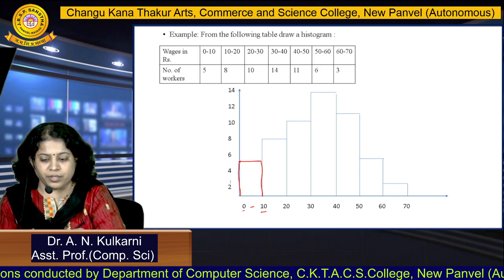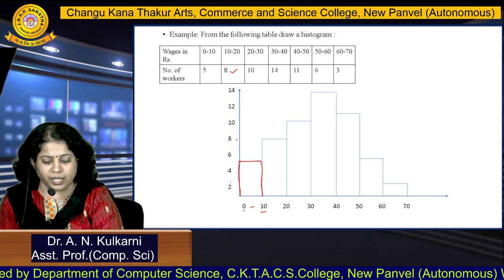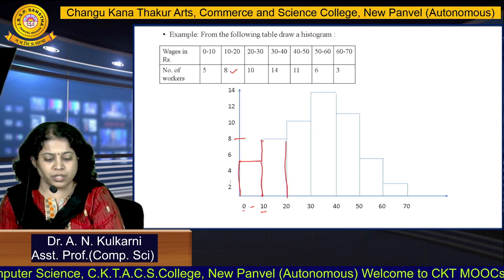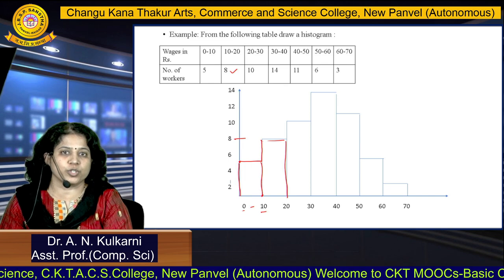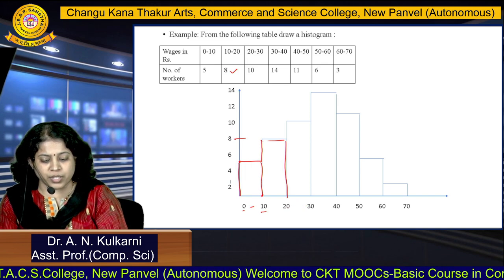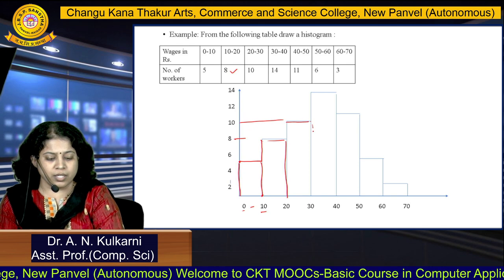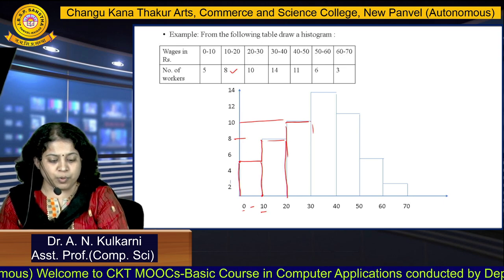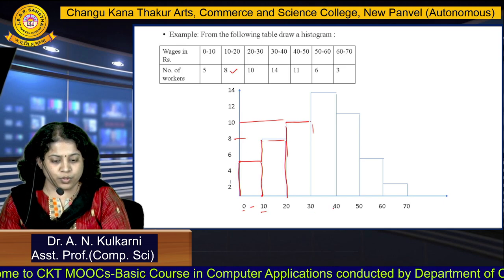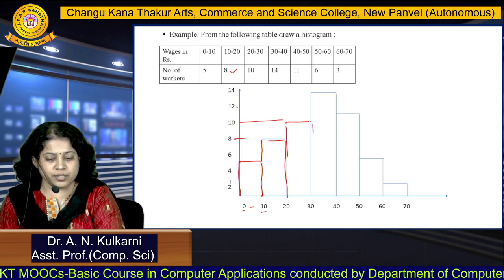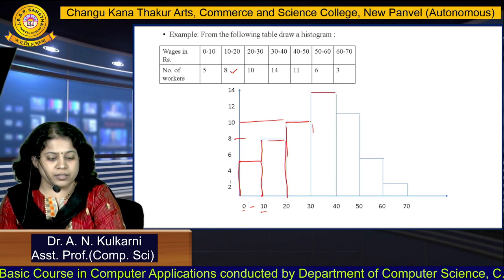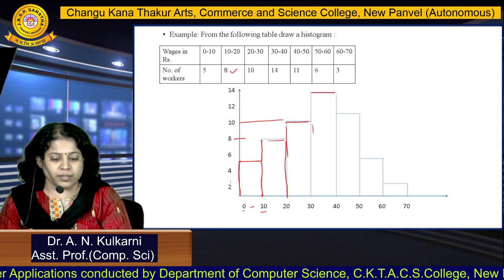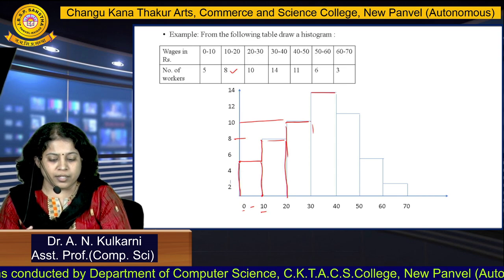Same for 10 to 20 — the frequency is 8. The vertical line goes up to 8 for 10 and for 20, joined with a horizontal line. Same for 20 to 30, it is 10 — these two vertical lines connected with a horizontal line forming a rectangle. For 30 to 40, it is 14 — these two vertical lines go up to 14 and are joined with a horizontal line. In this way, you can draw the histogram for the given data.